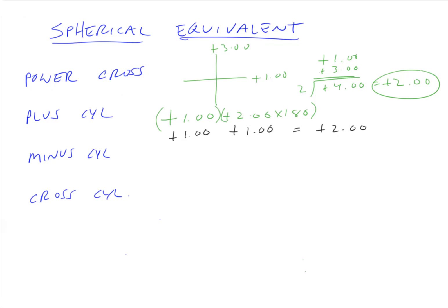For minus cylinder notation, the minus cylinder notation of this lens is plus three minus two axis 90 — we showed the quick and dirty way to do that in the last lecture. We figure out the spherical power and the spherical equivalent of the cylindrical component and add them together. The spherical equivalent of plus three is plus three. The spherical equivalent of minus two axis 90 is minus one. Plus three and minus one is plus two.